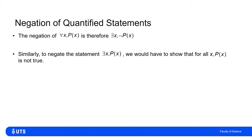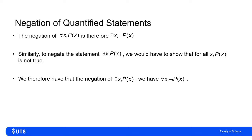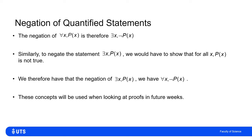Going the other way: to negate 'there exists an X such that P(X) is true,' I would show that for all X, P(X) is false. So the negation of 'there exists an X such that P(X)' is 'for all X, P(X) is not true.' These concepts can be quite overwhelming at first, but we will practice and reinforce them over the coming weeks through these videos and the accompanying workshop and tutorial materials.